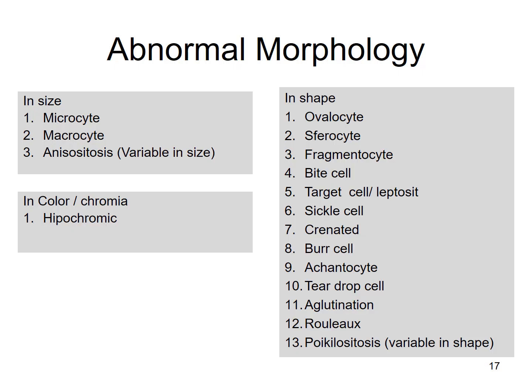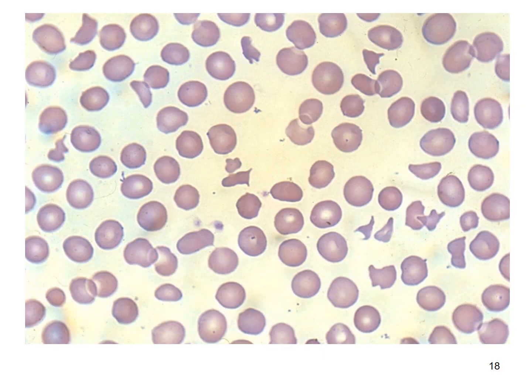There are many various abnormal morphologies of erythrocytes. These red arrows point to fragmentocytes.